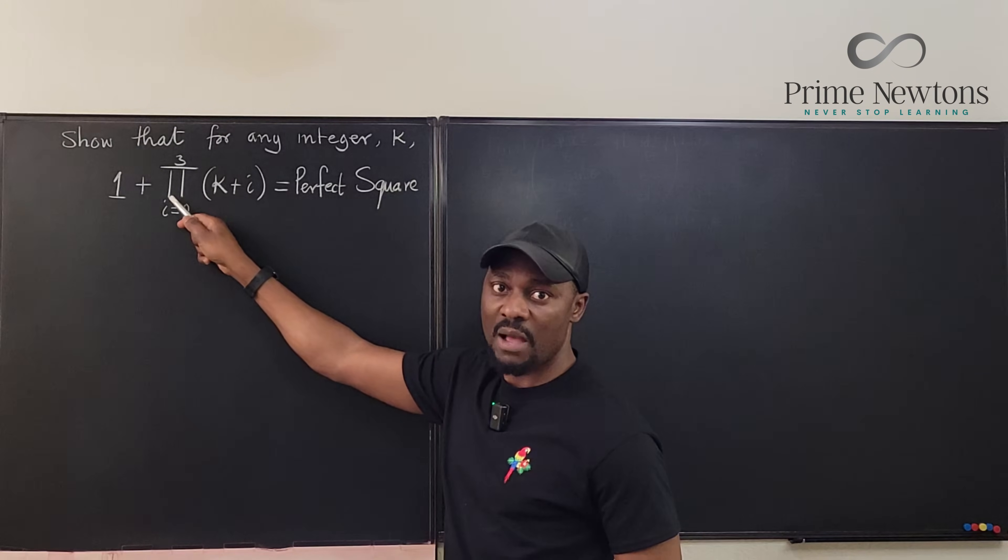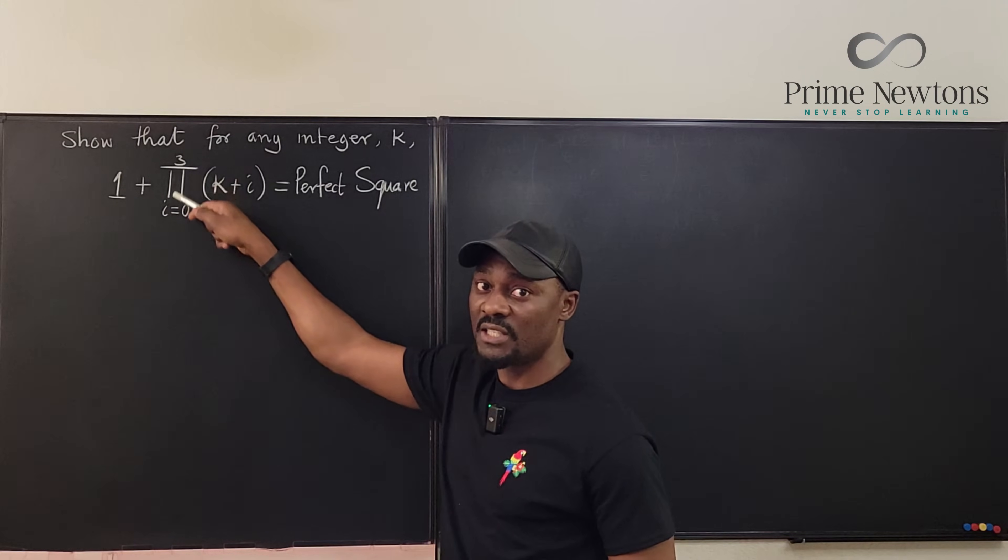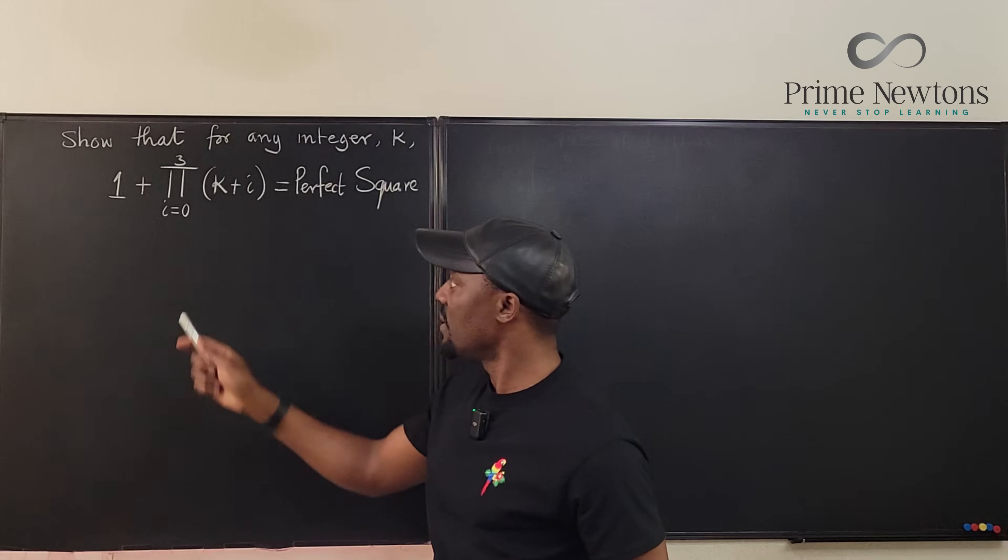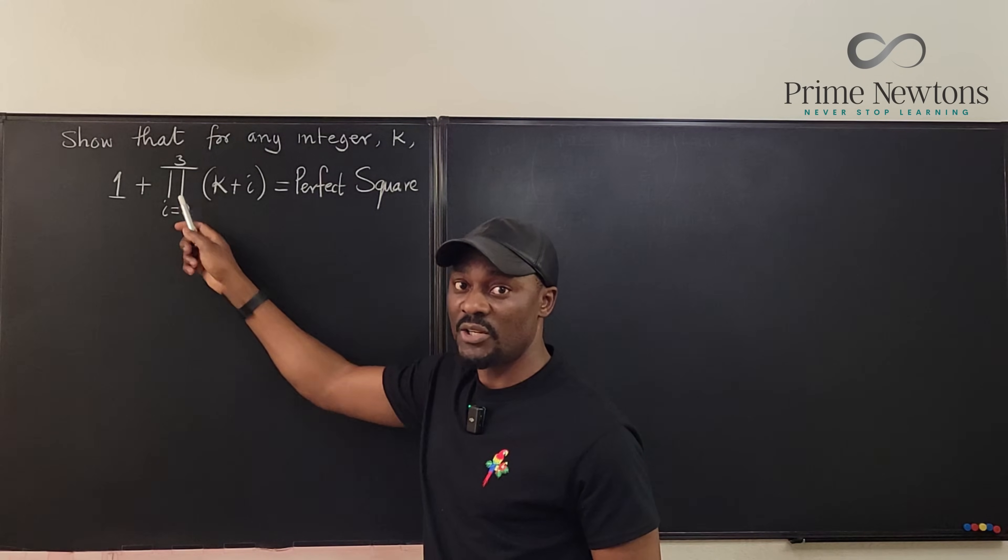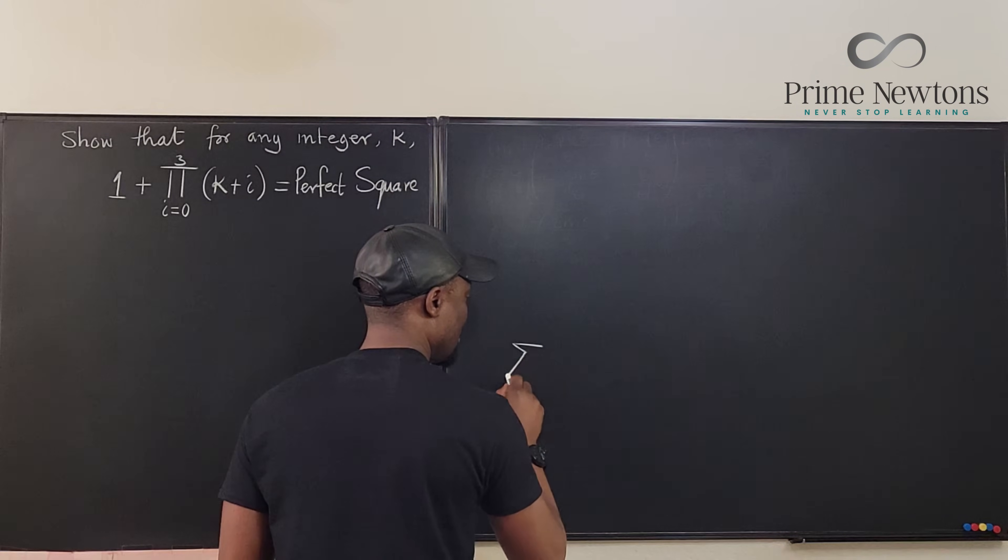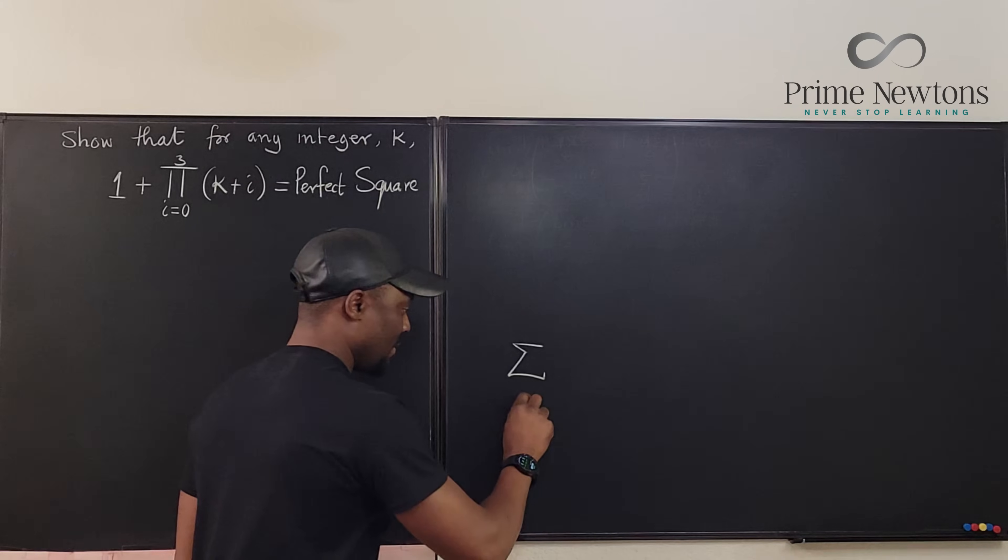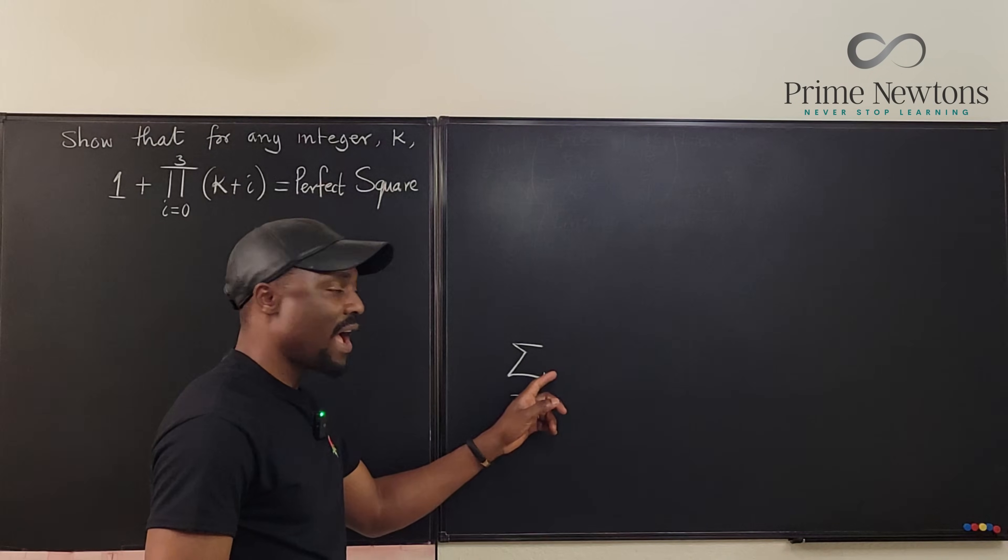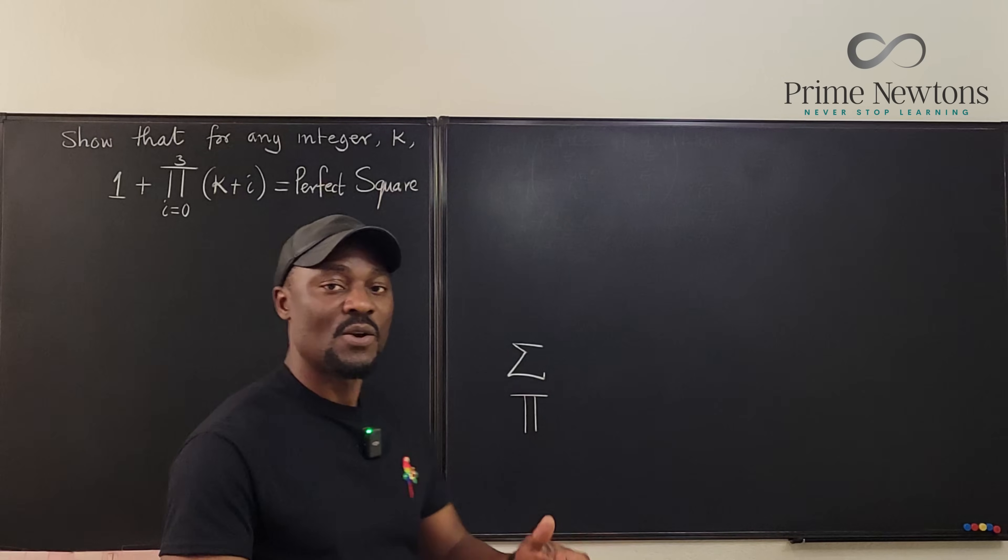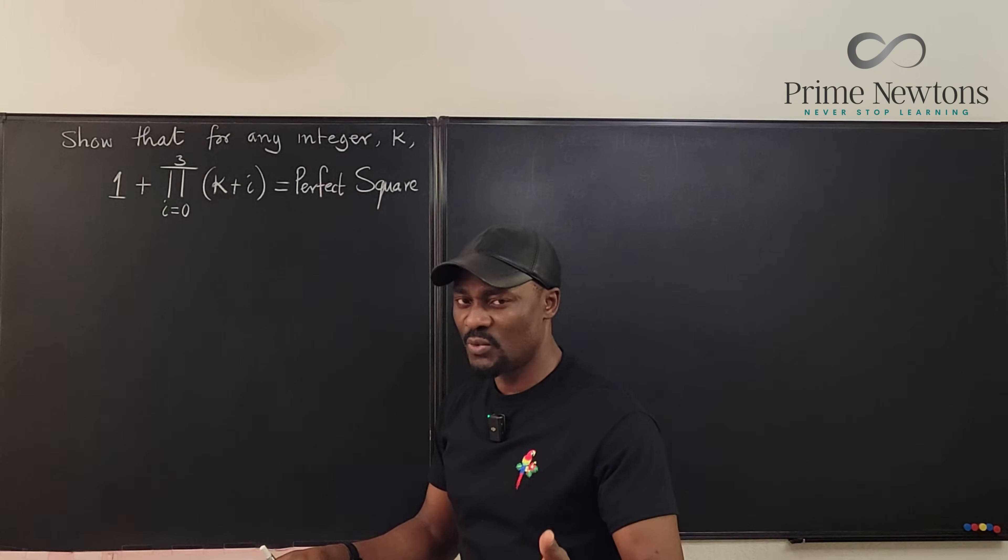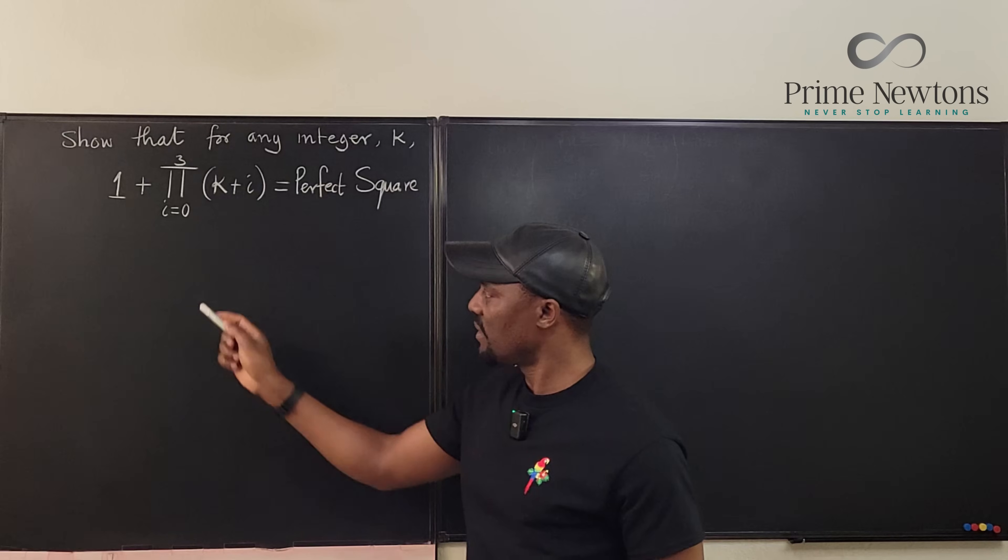Notice that this is a capital pi, and anytime you see an expression like this, it means it is the product of terms. This is the product notation. Just as you have the summation notation for adding terms, you also have the product notation for multiplying terms. You're not adding things together, you're multiplying things together. The question is, what are you multiplying? Look at the notation.